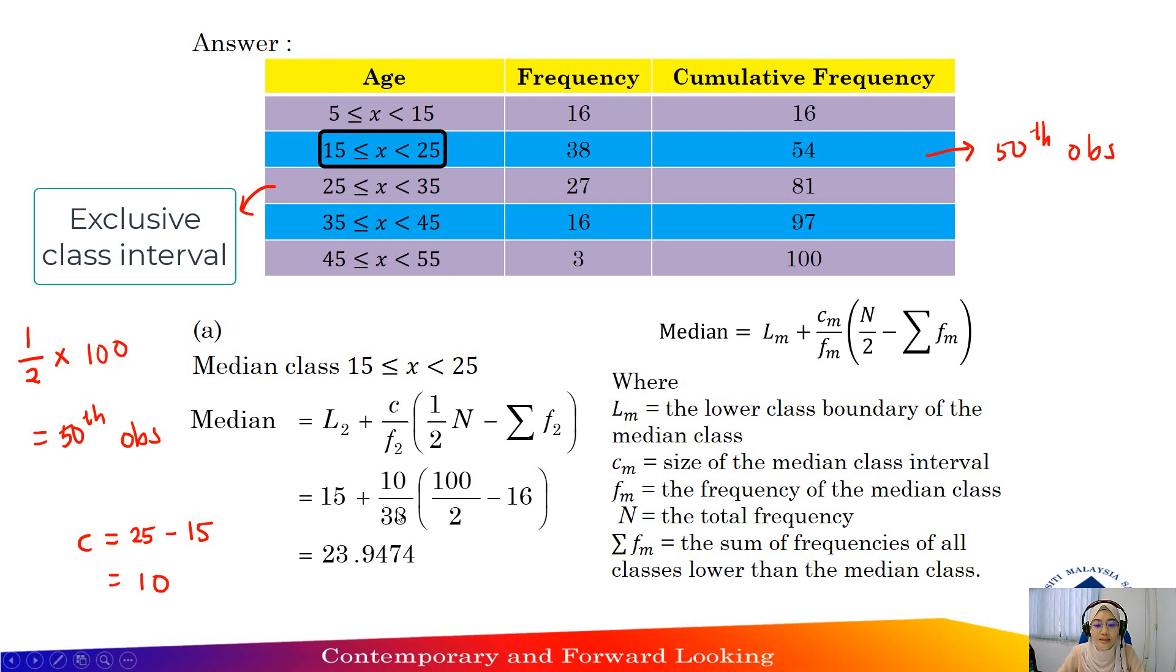And the frequency for the median class is 38. And then, one-half times n, so 100 divided by 2 minus the sum of frequencies of all classes lower than the median class. So lower than the median class is 16 only. Using calculator, you will get 23.9474, up to 4 decimal places.